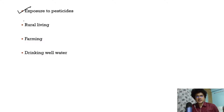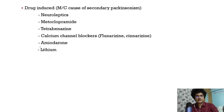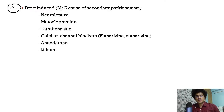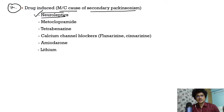Other environmental risk factors include exposure to pesticides, rural living, farming, and drinking well water. Now, very importantly, drug-induced Parkinson's is the most common cause of secondary Parkinson's disease. The most important class of drugs causing this is neuroleptic or antipsychotic drugs.